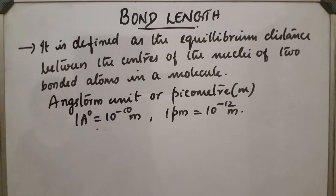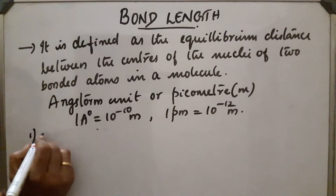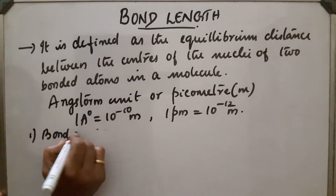Bond length depends upon two factors. The first one is bond multiplicity, and the second one is size of the atom.